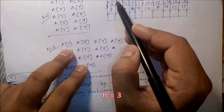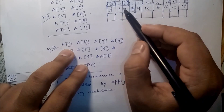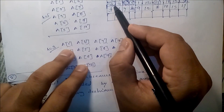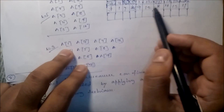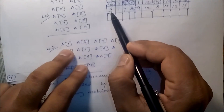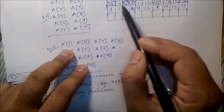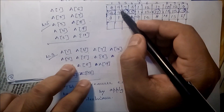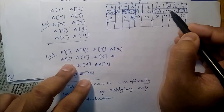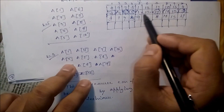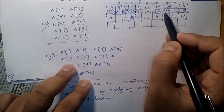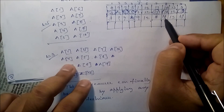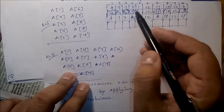With h equal to 3, compare and arrange in proper order. For the subsequence at positions 1, 4, 7, 10 — values 8, 5, 17, 4 — sort to get 4, 5, 8, 17. Next, compare positions 2, 5, 8: values 9, 1, 10 — sort to get 1, 9, 10 in ascending order.